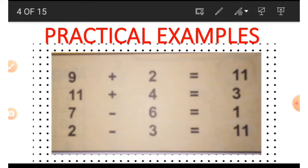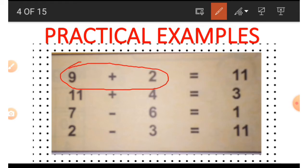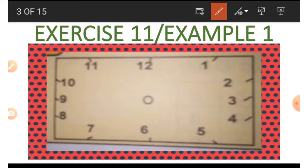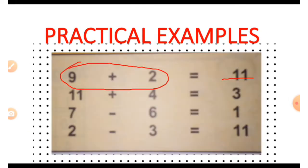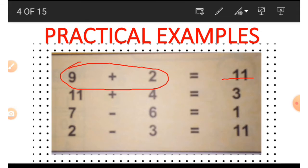In the first example we have 9 plus 2. Ordinarily we'd say that is 11, but we need to know how to use our analog clock face to do this. We start with the first number, which is 9, and move in a clockwise direction. Since it's plus 2, we count 2 from 9: we get 10 and 11. So the answer is 11.